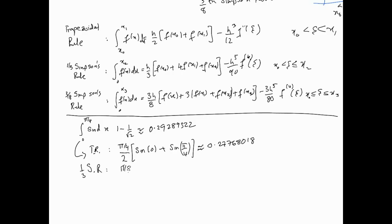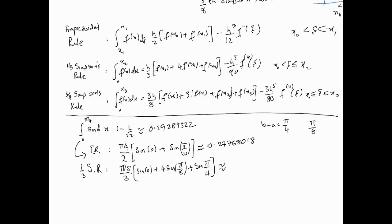Using the one-third Simpson's rule: b − a = π/4, split into two equal parts giving h = π/8. The formula gives (π/4)/3 · (sin(0) + 4·sin(π/8) + sin(π/4)), and that approximation is already significantly more accurate.